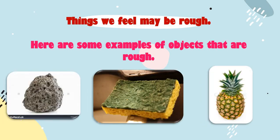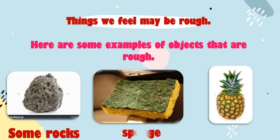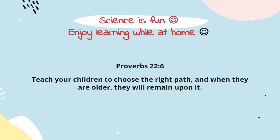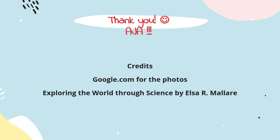Things we feel may be rough. Here are some examples of objects that are rough. The first one is some rocks. Next is a sponge. And the third one is the skin of a pineapple — they are rough. Science fun — remember and enjoy learning while at home. Let us remember. Aja-aja, fighting!